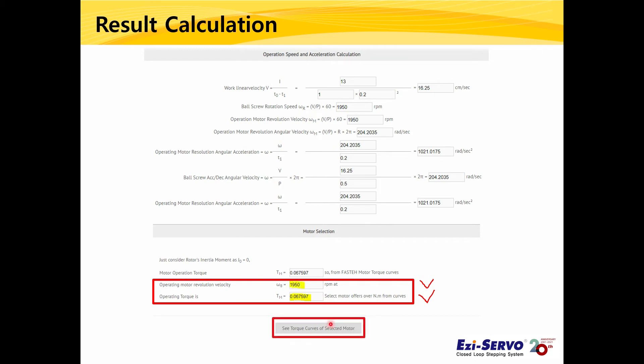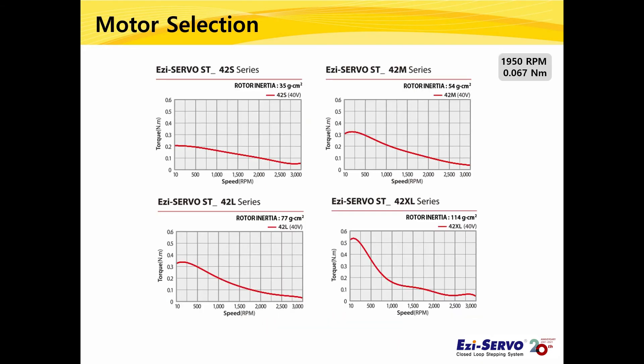Click the button here to see the torque graph of the motor. Torque graphs from 20 to 86 mm size motors will be shown. Since we decided to use a 42 mm motor, let's check the data for 42 mm motors. The required result was a motor with torque larger than 0.067 Nm at 1950 rpm. In the case of 42 mm motors, all motors meet this condition at about 2000 rpm.